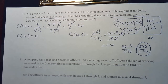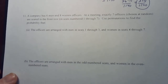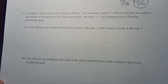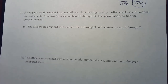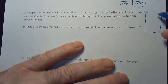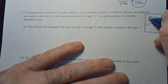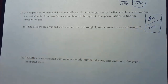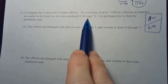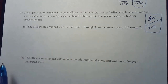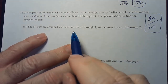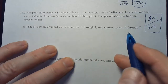Number 11: a company has 6 men and 8 women officers. At a meeting, exactly 7 officers chosen at random are seated in the front row in seats numbered 1 through 7 — order matters here. Use permutations to find the following probabilities. Part A: the officers are arranged with men in seats 1 through 3, and women in seats 4 through 7.